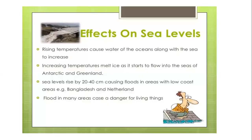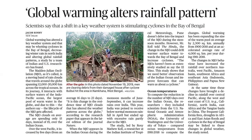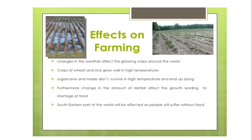Effects of global warming on sea level: rising temperatures cause ocean water to expand, and increasing temperature causes ice to melt — as seen in Antarctica and Greenland. Sea levels may rise 22.5 cm, causing floods in low-lying coastal areas like Bangladesh and the Netherlands. Global warming also alters rainfall patterns. Effects on farming: changes in weather affect growing crops worldwide. Wheat and rice may grow well in higher temperatures, but sugarcane and cabbage do not survive high temperatures, and changes in rainfall can lead to food shortages.